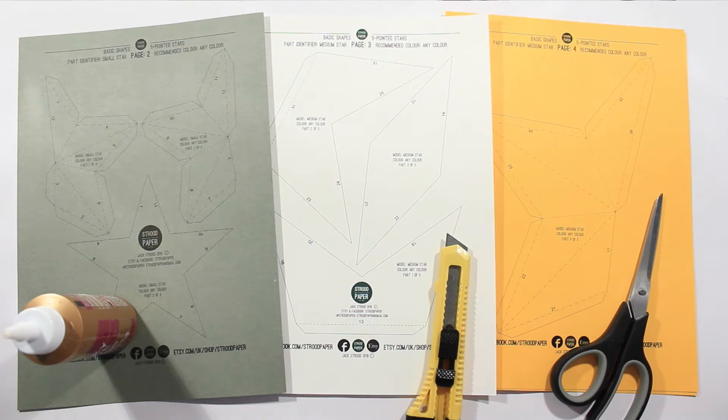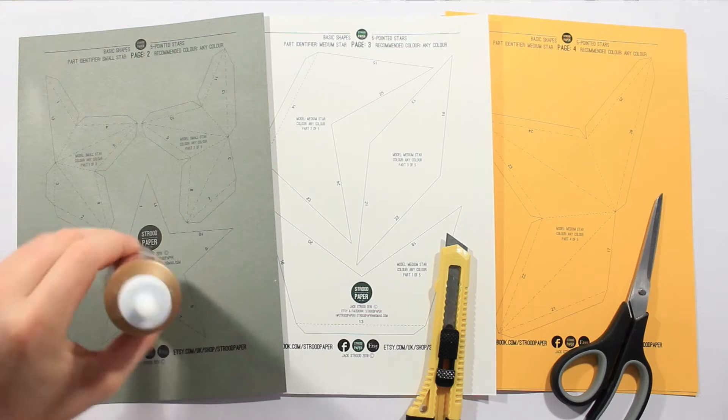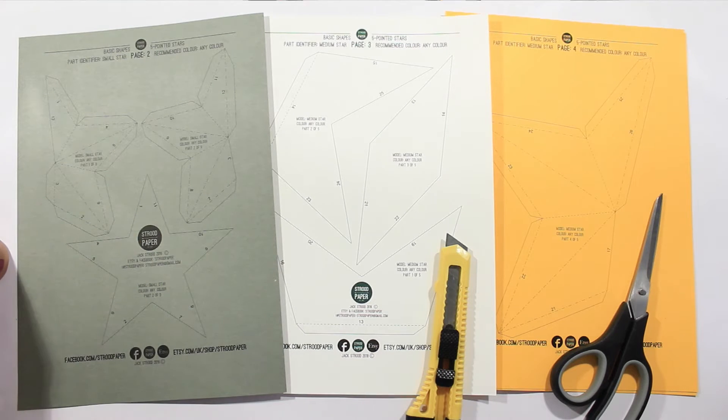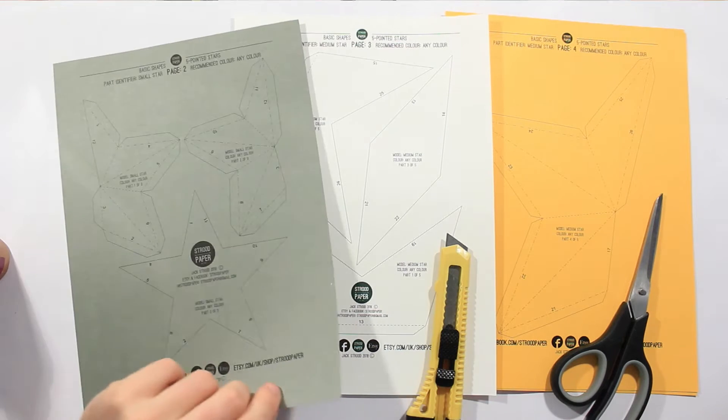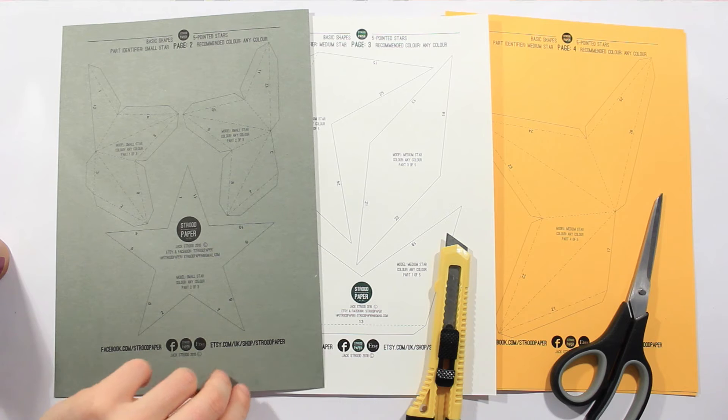The tools you'll need, basically a knife or scissors, whichever you prefer, and some glue to put it all together, and the card you'll need to print it out on is around about 200 GSM, that's the right thickness for these type of models.